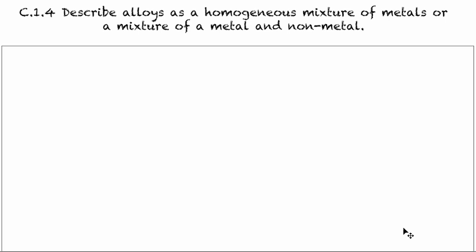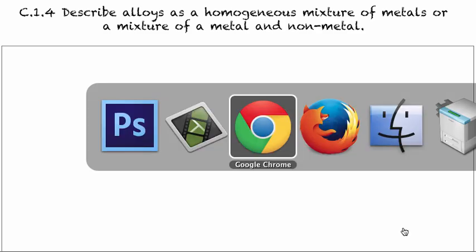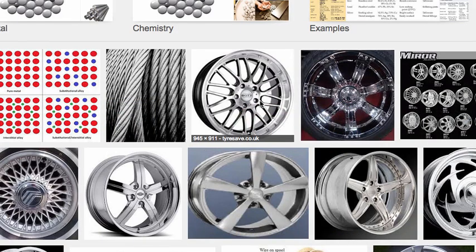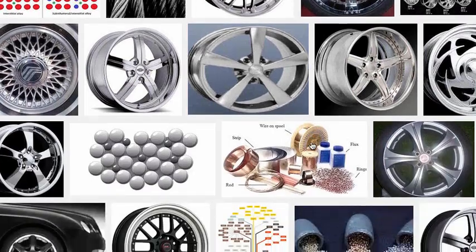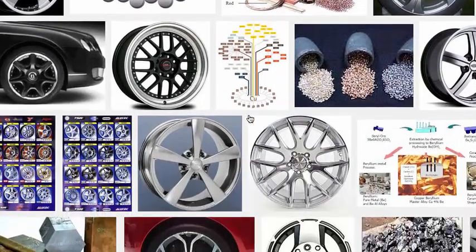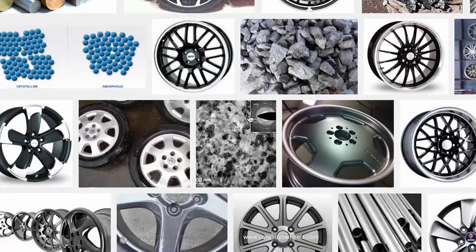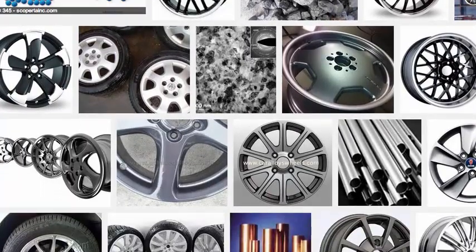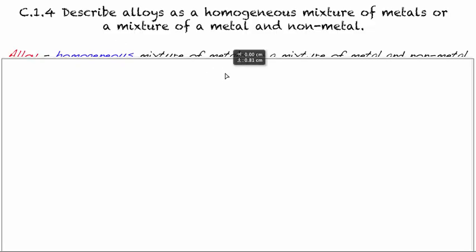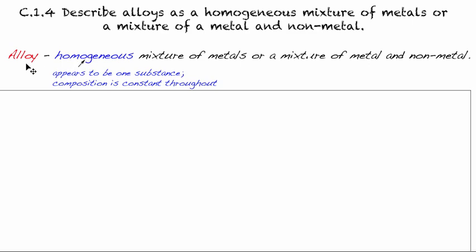In this video, we're going to describe alloys as a homogeneous mixture of metals or a mixture of a metal and non-metal. So if we try to visualize an alloy, basically it looks like, you know, any pure metal that we would find on the periodic table. And so really, it's hard for us to tell visually if something is a pure metal or an alloy. So let's take a look at what the difference is. First, let's give a definition of alloy. Well, it's a homogeneous mixture of metals or a mixture of a metal and non-metal. So you can actually take that right from the outcome. And the word homogeneous means it appears to be one substance.